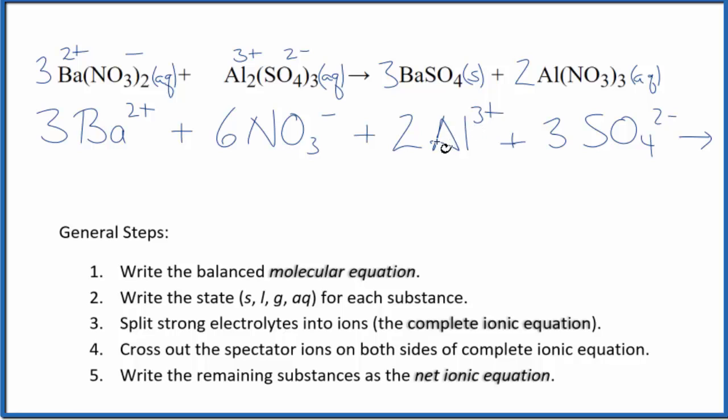So these are the reactants for our complete ionic equation. For the products, we don't split solids up. So we'll have three BaSO4. And then we said aluminum was three plus the nitrate one minus. So two aluminum ions. Just like in the reactants, plus two times three. So six of these nitrate ions. Put them down here. And this is the complete ionic equation.